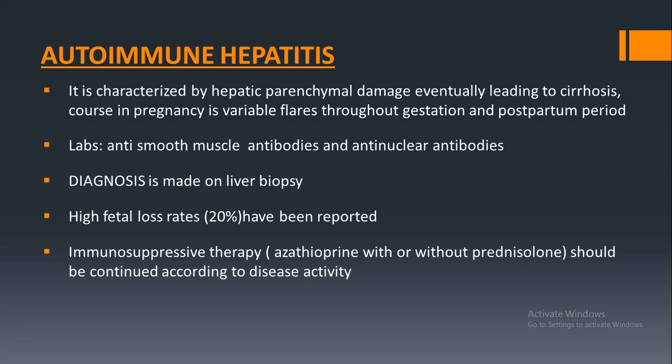Autoimmune hepatitis is characterized by hepatic parenchymal damage which eventually leads to cirrhosis. The course is variable — there may be normal periods or flares throughout gestation and the postpartum period, and treatment is provided according to those flares. Diagnosis involves the presence of anti-smooth muscle antibodies and anti-nuclear antibodies; definitive diagnosis is on liver biopsy. In autoimmune hepatitis there is a higher fetal loss rate reported to be about 20%. Treatment is immunosuppressive therapy, including azathioprine with or without prednisolone, continued according to disease activity in pregnancy.